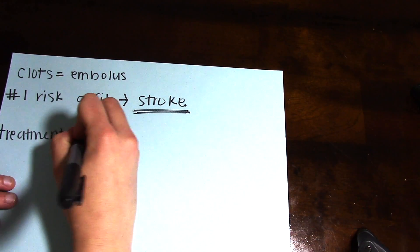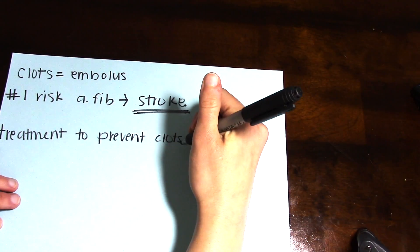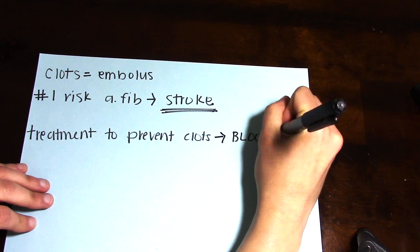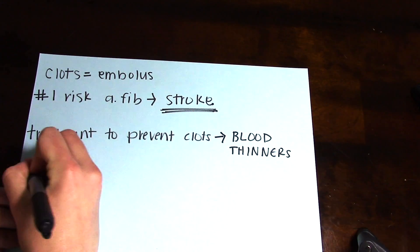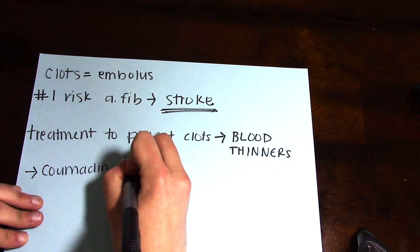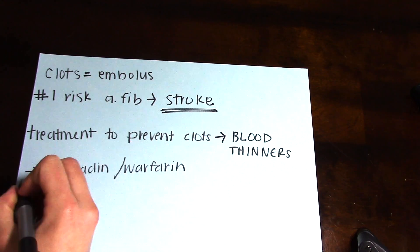Although there is not a really good treatment for AFib, the treatment to help prevent the complications of AFib would be blood thinners. Off the top of my head, one of the most common blood thinners that we use is Coumadin or Warfarin.